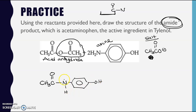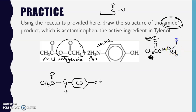That gives me my amide. The second amine takes on an additional hydrogen - a proton - so it becomes NH3+ because it's gained that proton. The carboxylate portion, the leftover of the anhydride, is attracted to that second alkyl ammonium to form the salt. So this is the active ingredient in Tylenol, and it is an amide.